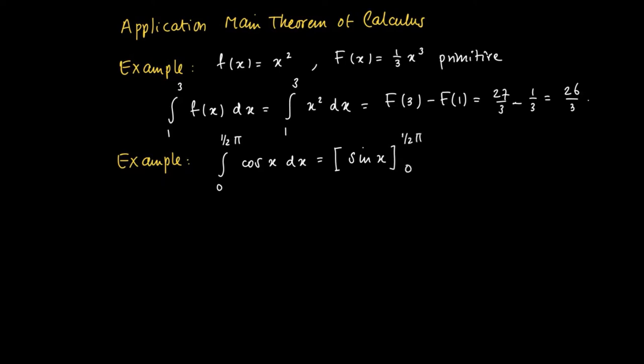A primitive is given by sine x, so we may take the difference sine(π/2) minus sine(0), which is denoted like this. This equals sine(π/2) minus sine(0), which of course equals 1.